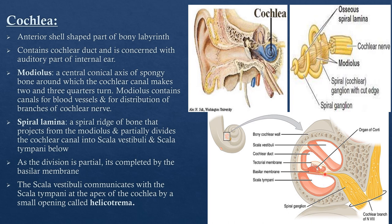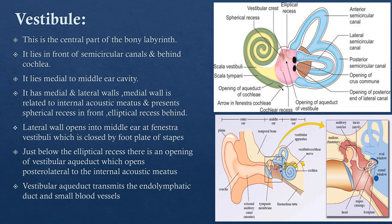The scala vestibuli communicates with the middle ear through the fenestra vestibuli, which is closed by the footplate of the stapes. The scala vestibuli and scala tympani communicate with each other at the apex of the cochlea at a point known as the helicotrema. Now moving to the middle part of the bony labyrinth — the vestibule. The cochlea is the most anterior structure, the vestibule is in the middle, and the semicircular canals lie behind.